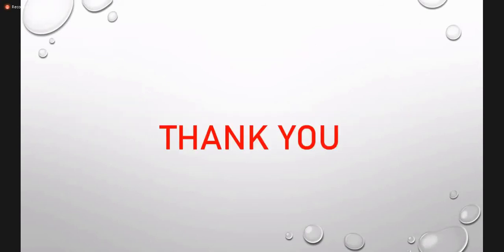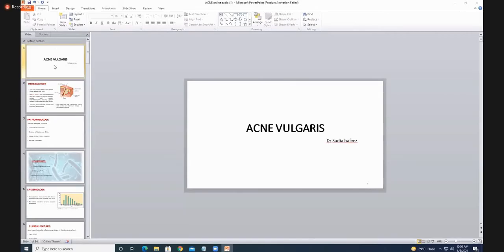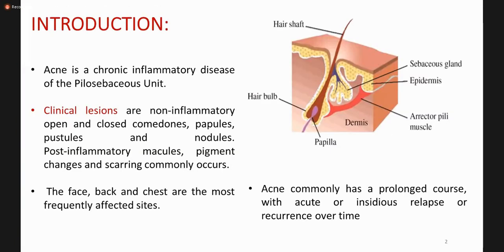That's all about bacterial infections. Next topic is acne vulgaris. Acne is a chronic inflammatory disease involving the pilosebaceous unit — the hair follicle with the sebaceous gland attached along its side. This whole unit is known as the pilosebaceous follicle, and chronic inflammation of this unit is known as acne.